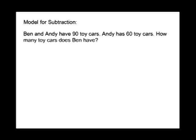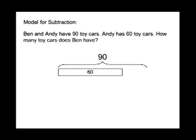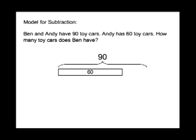In this example, we're going to model for subtraction. Ben and Andy have 90 toy cars. Andy has 60 toy cars. How many toy cars does Ben have? We model 90 toy cars all together, and Andy has 60 toy cars. Our equation is 90 minus 60 equals 30.